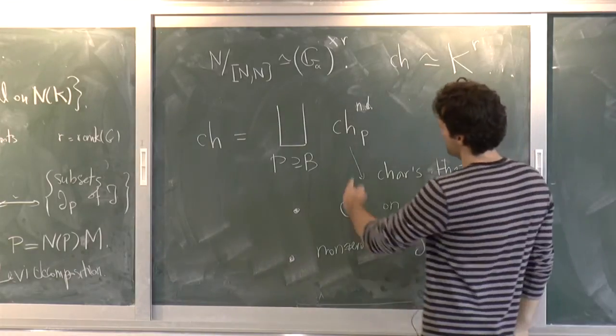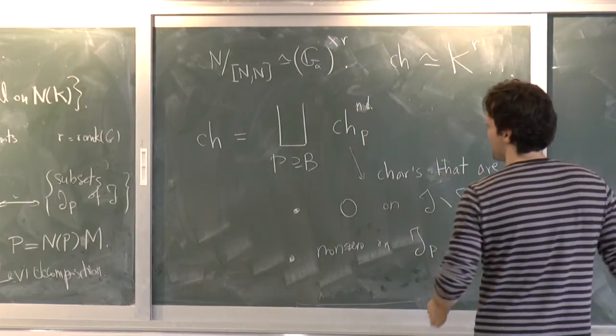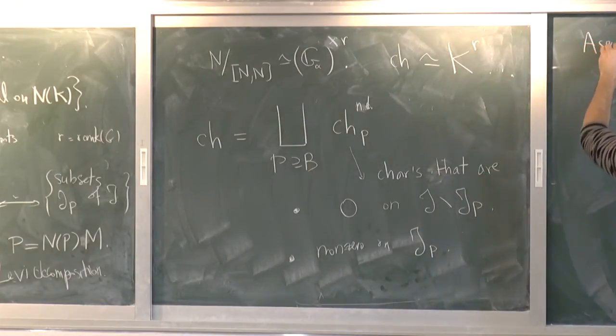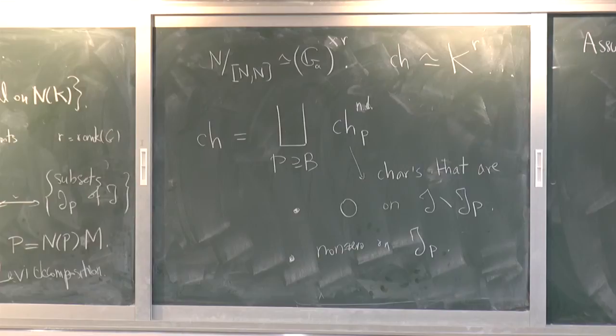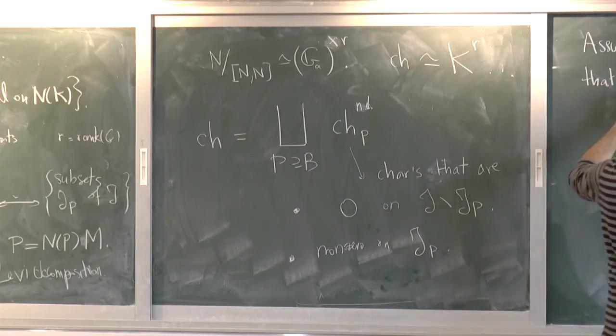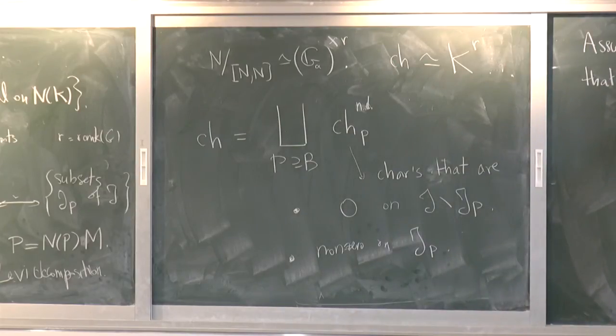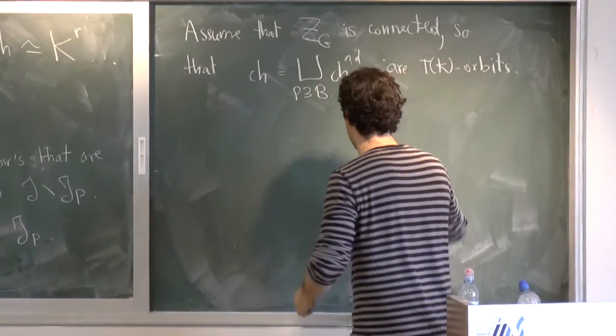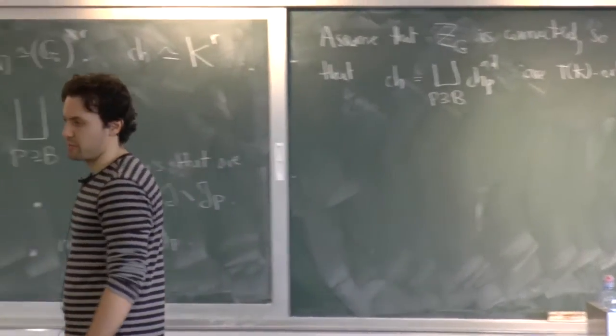All right, so now I need a technical point. I need to assume something about G in order to have this nice decomposition to be decomposition into T of K orbits. So assume for the rest of the talk that the center of G is connected.